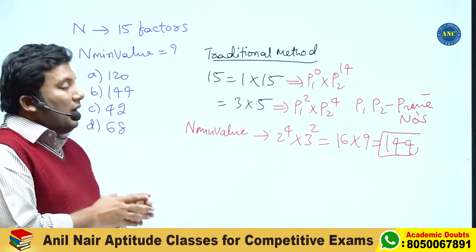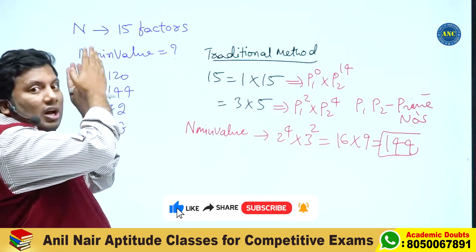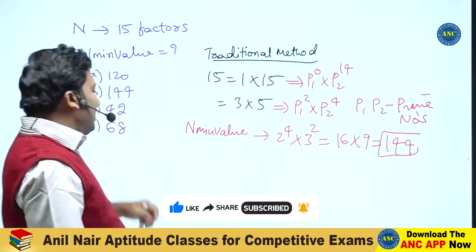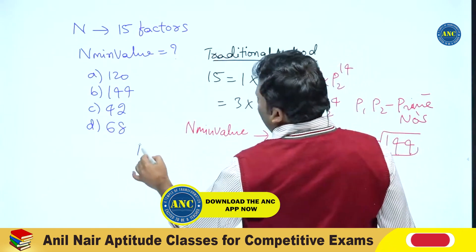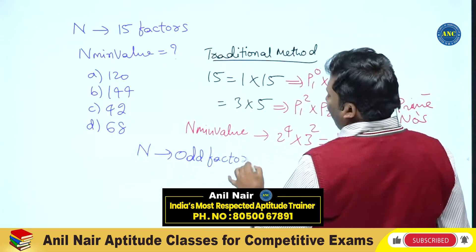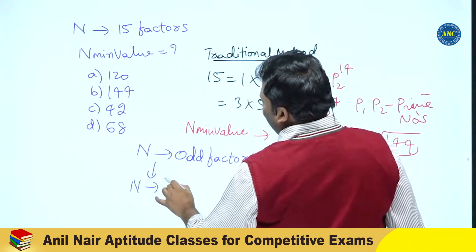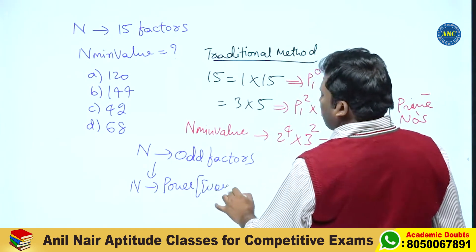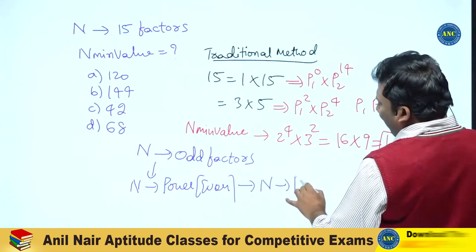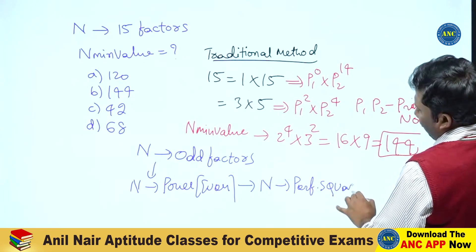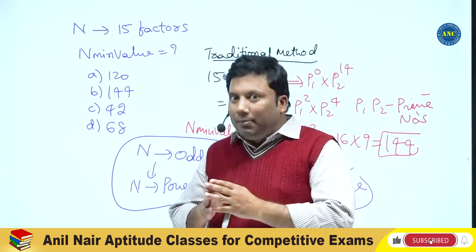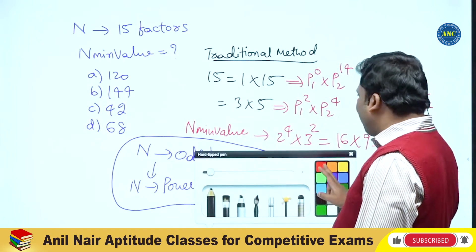If the number of factors given are odd, there is a beautiful concept. If a number has an odd number of factors, the power will be an even number — because from 0 to an even number only gives an odd count. If the power is even, then the number is a perfect square. So if a number has an odd number of factors, the number is a perfect square.